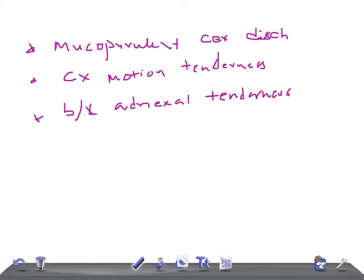What are the investigations you want to do? Remember, mucopurulent cervical discharge and cervical motion tenderness are really important points that will help you diagnose acute salpingo-oophoritis. These are key diagnostic points for USMLE.